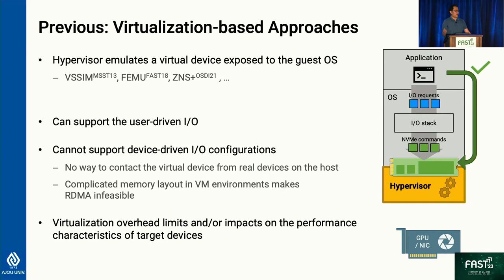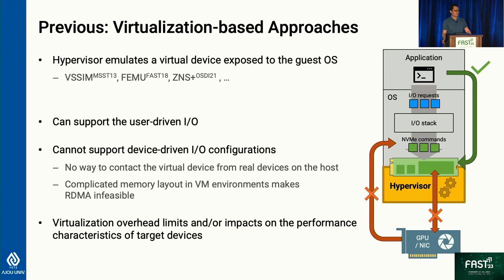The other popular way of building an emulator is to use a virtual machine or host virtualization, where the hypervisor emulates the device. Unfortunately, this approach can support user-driven IO, but still cannot support device-driven IO, because there is no way to contact the virtual device presented in the guest. Also, this complicated memory layout in virtual machines makes RDMA almost infeasible. There is another big downside: virtualization overhead. Every request goes through the virtualization layer, incurring high overhead that limits or impacts the performance characteristics of the emulation target device.